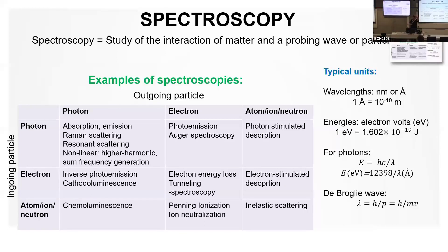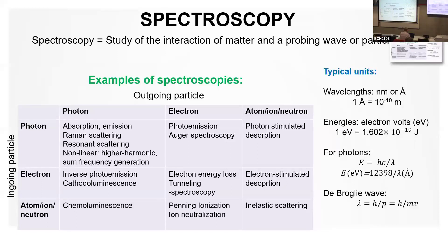Typically we measure wavelengths in nanometers or angstroms, and energies in electron volts. Obviously it doesn't make sense to use SI units — you've probably forgotten about those already. For photons, there's a very useful relation for wavelength and energy: the conversion factor is basically Planck's constant times the speed of light. It gives an inverse ratio of energy in electron volts and wavelength in angstroms: 12398 divided by λ in angstroms gives you electron volts, and vice versa.